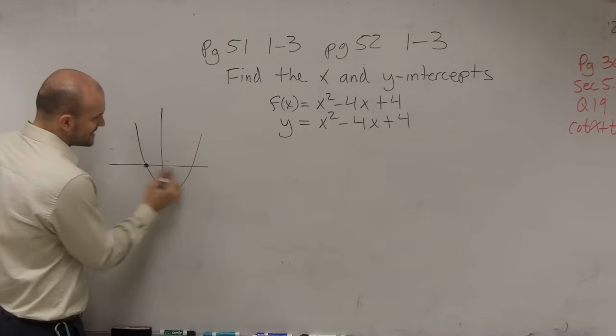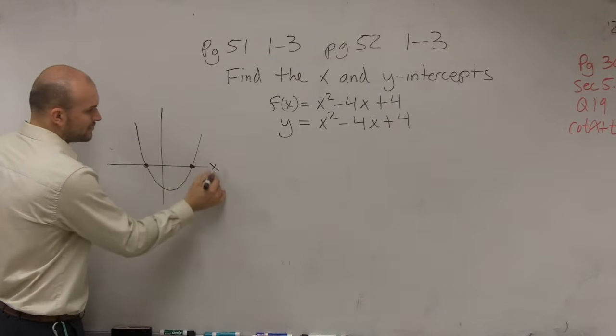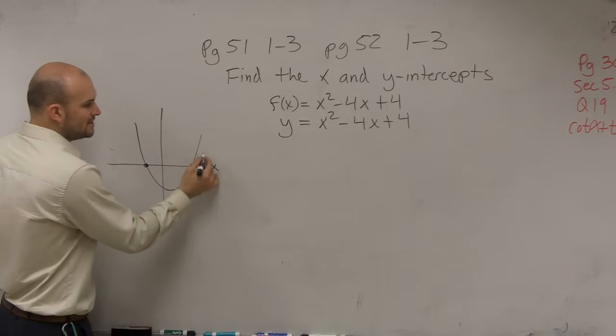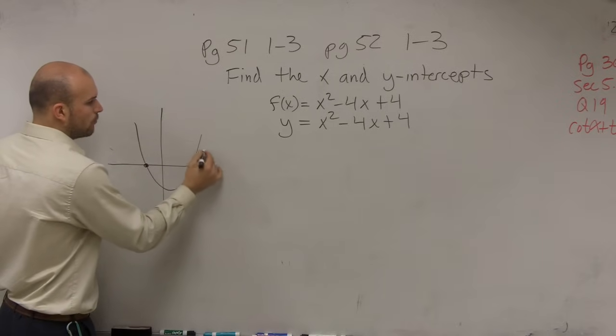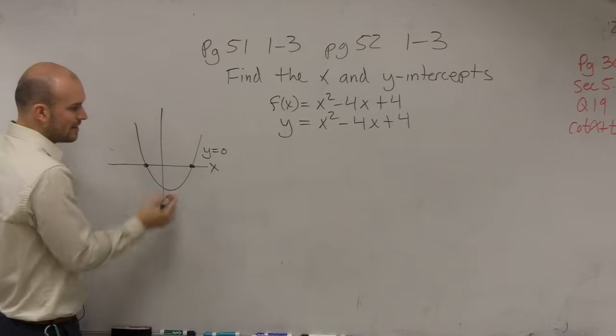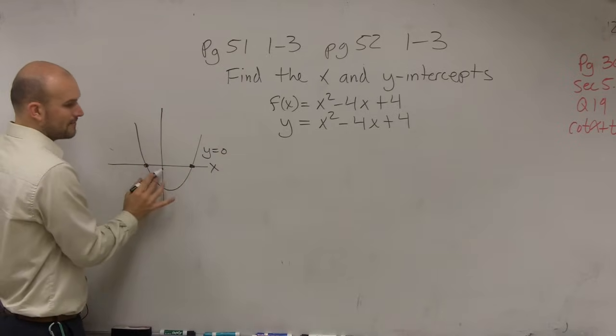When we look at the x intercepts, right, that's where the graph crosses the x-axis. We know that y equals 0, right? There's no value for y here, or I'm sorry, the value of y is 0.